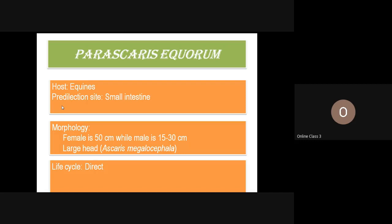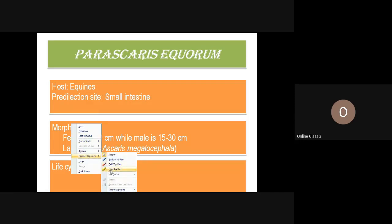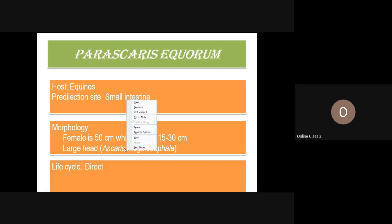The first is Parascaris equorum, which may also be called Ascaris megalocephala because it has a large head. Being an ascarid, the female is really large — up to 50 centimeters — while the male is around 30 centimeters. They are located in the small intestine.